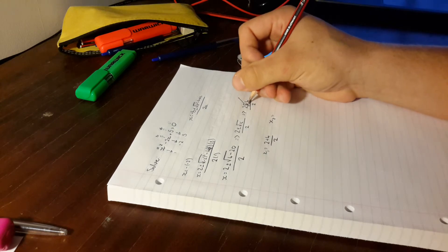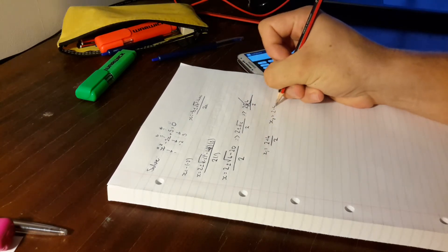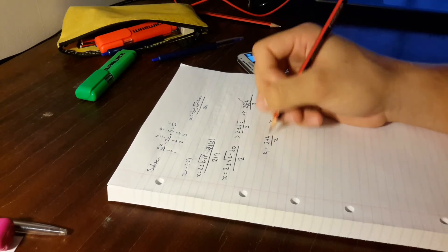And then you want to go 2 minus 4, and we did plus in this one, so you want to have 2 minus 4 over 2. So you end up with 2 separate answers.